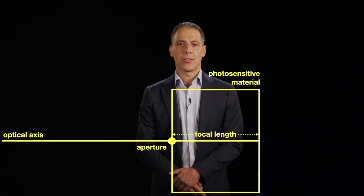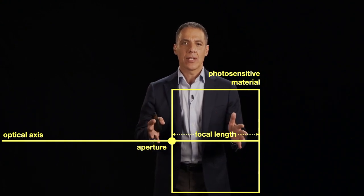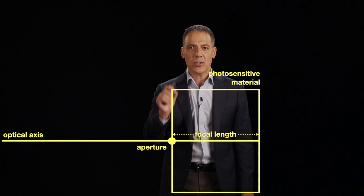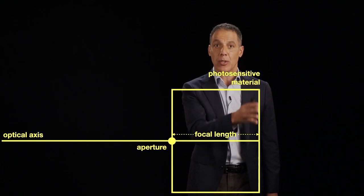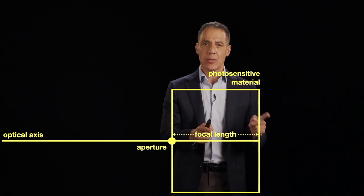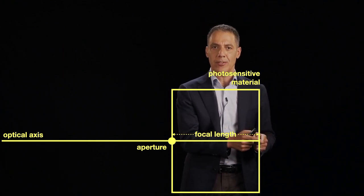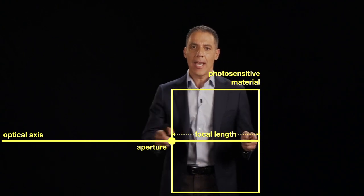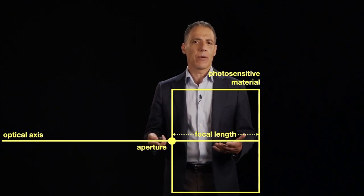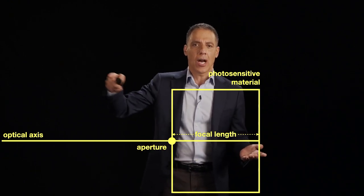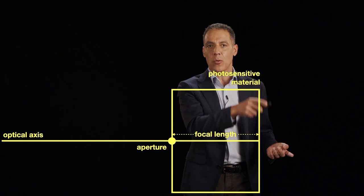Let me remind you of the nomenclature we defined about the camera obscura. We have a box; at the front is a small aperture, just a very small hole. At the back is a photosensitive material that records the image. The distance between the photosensitive material and the aperture is the focal length, and the ray perpendicular to the back of the box going through the aperture is called the optical axis. Light out in the world enters into the aperture and strikes the sensor, forming an image.